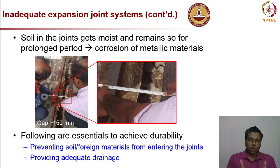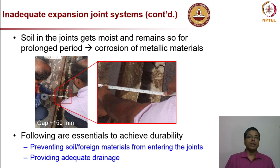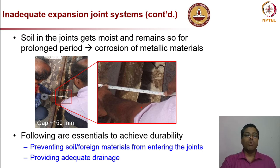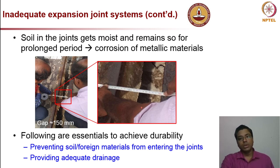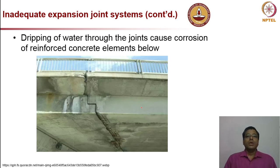For open expansion joints, providing a sealant is the preferred solution to prevent soil and debris from entering and to protect the joint. Routine cleaning is an alternative but is less practical due to manpower requirements. An elastomeric sealant that allows expansion and contraction without generating stress is the recommended choice. Water stagnation at expansion joints, as shown in one photograph, causes heavy corrosion of nearby rebars.